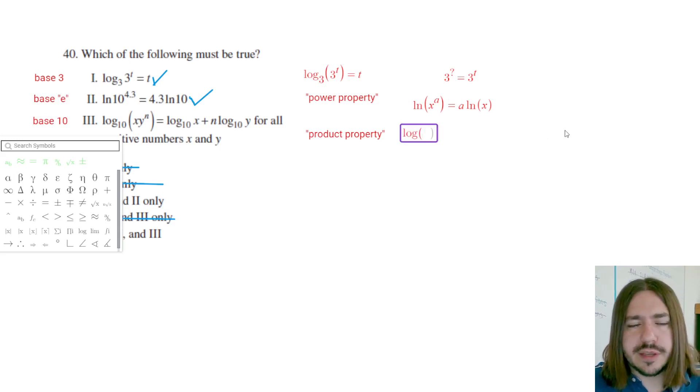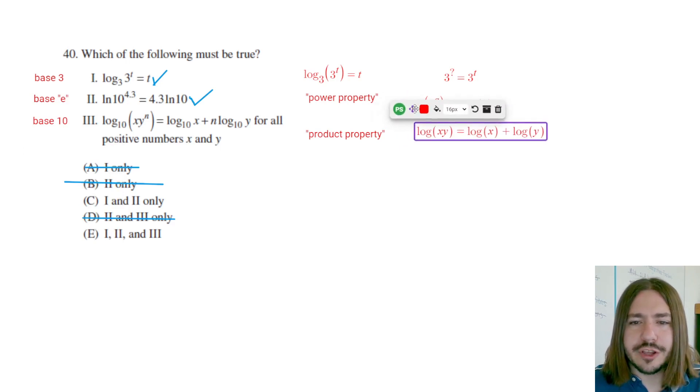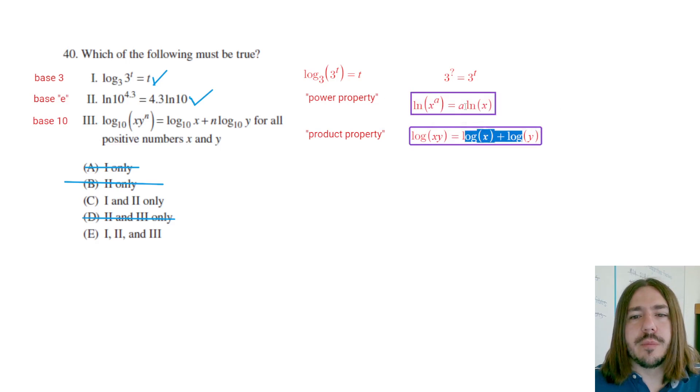So anyway, the product property here states that if you have log, and again this could be any base, so I'm just going to use base 10 as the example here because that's what this is, and you have a product inside that logarithm, you can split up those factors so that each is inside their own logarithm. You do that using addition. We're not really going to go through the proofs of these. You can google those on other videos if you want a more in-depth explanation why this is true, but this is the property we're going to use to verify number three.